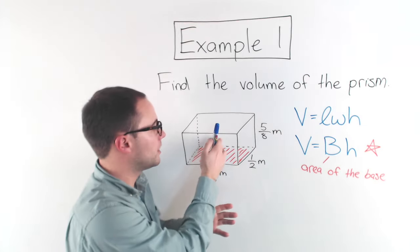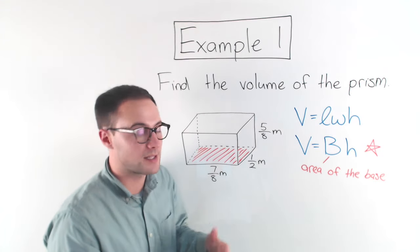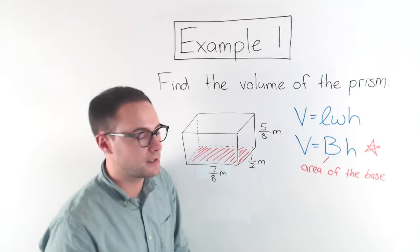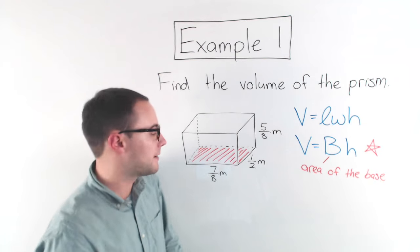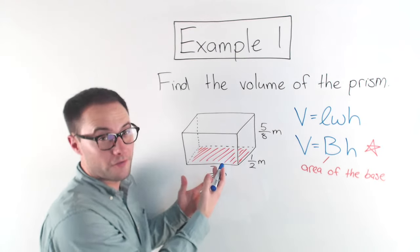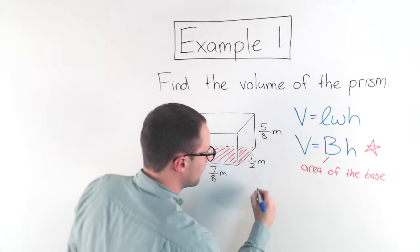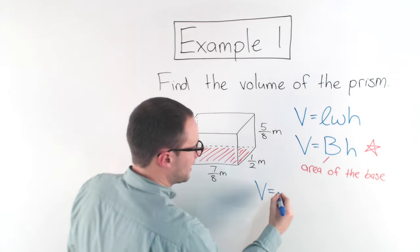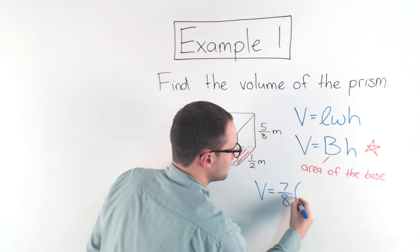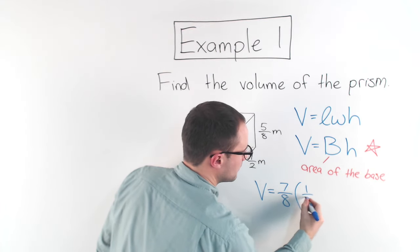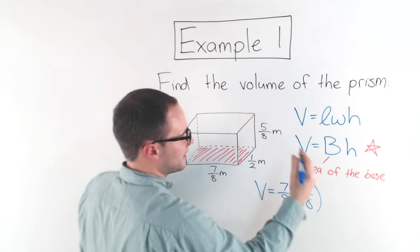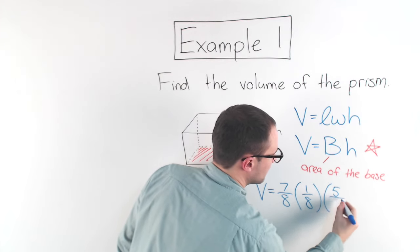We're only going to be dealing with rectangular prisms in this lesson, so it's not a big deal to worry about that. Anyways, let's solve for volume. So let's go ahead. Length times width times height. So volume is going to be 7/8 times 1/2 times the height, which is 5/8.